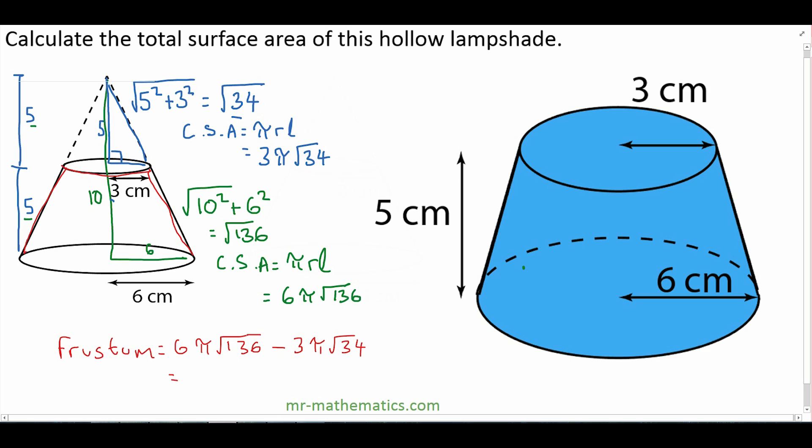So the curved surface area of the hollow lampshade will be 164.87 centimeters squared.